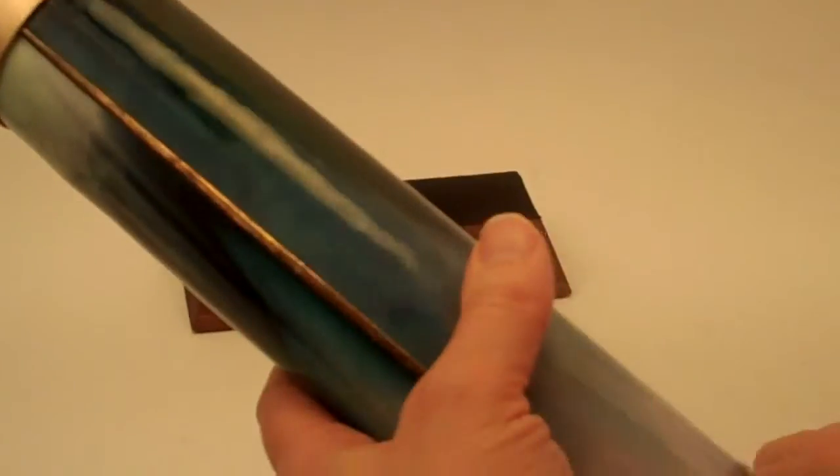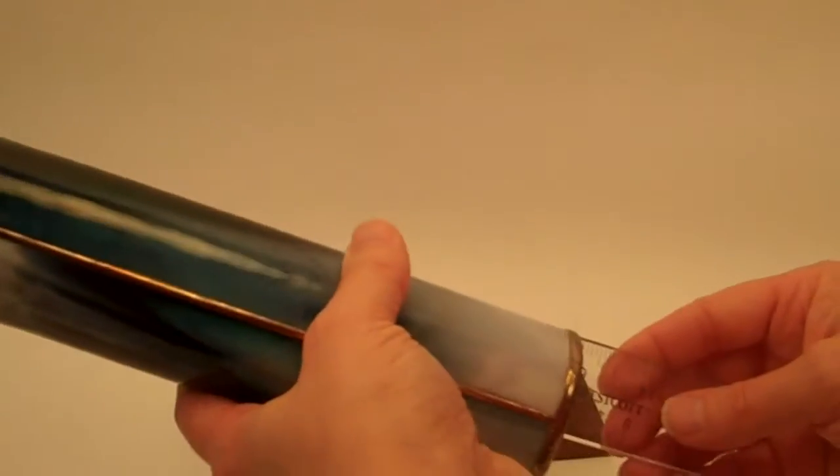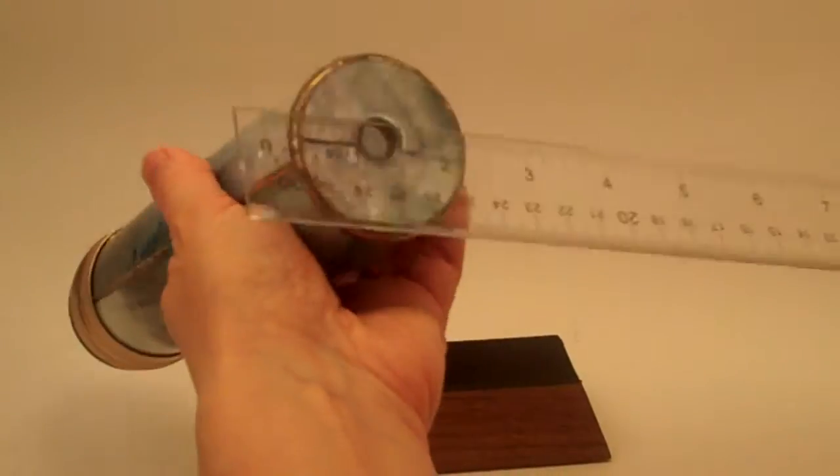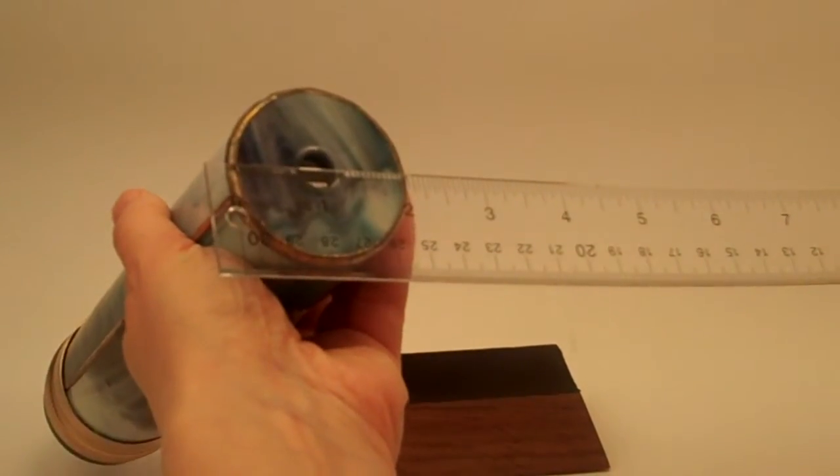Of course, the best part of a kaleidoscope... I'll go over the measurements of this one: nine and a half inches in length and a diameter of two inches. The best part is the images.